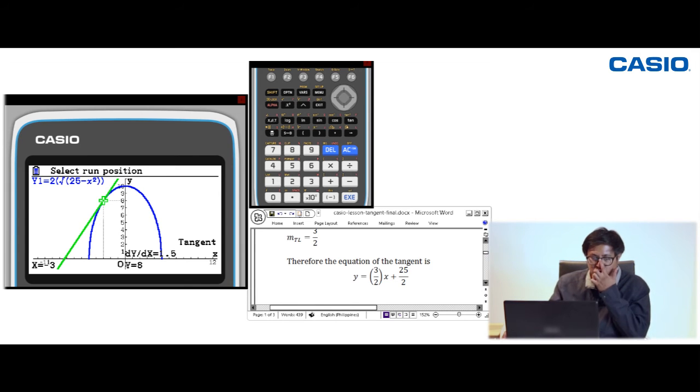Press EXE again and the exact equation of the tangent line will appear in the bottom left of the screen. Press EXE. The curve equation is y = 1.5x + 12.5, and you know it's the same as 3/2 or 1.5 and 25/2 or 12.5. That's it.